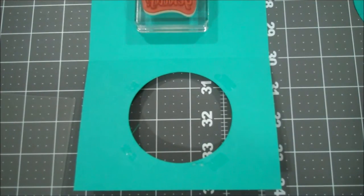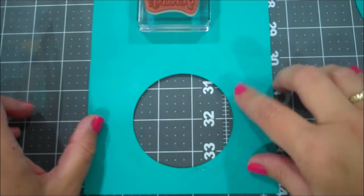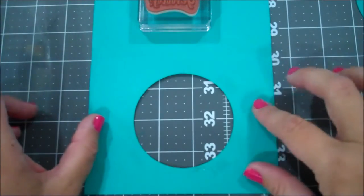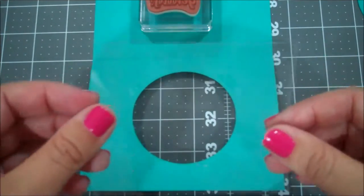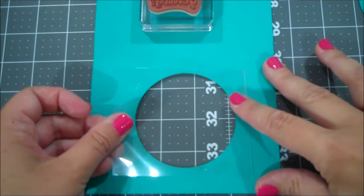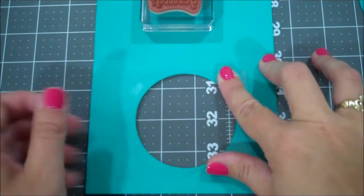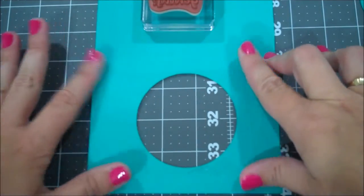Hi sorry about that my phone went ringing and I had to get it. So what you saw was I put a little bit of fast fuse around the back side of the circle that we made. I'm going to take a piece of our cello bags that I just cut to kind of fit over and I'm going to lay that across that area.